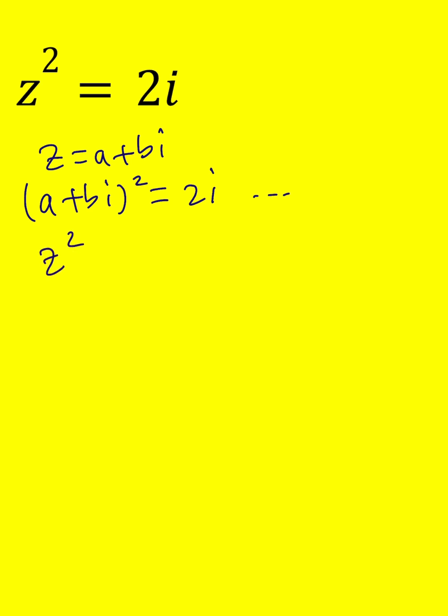If you consider the fact that 2i can actually be plotted in the complex plane as two units away from zero, which will appear here on the imaginary axis, and it basically makes an angle of pi over 2 radians.